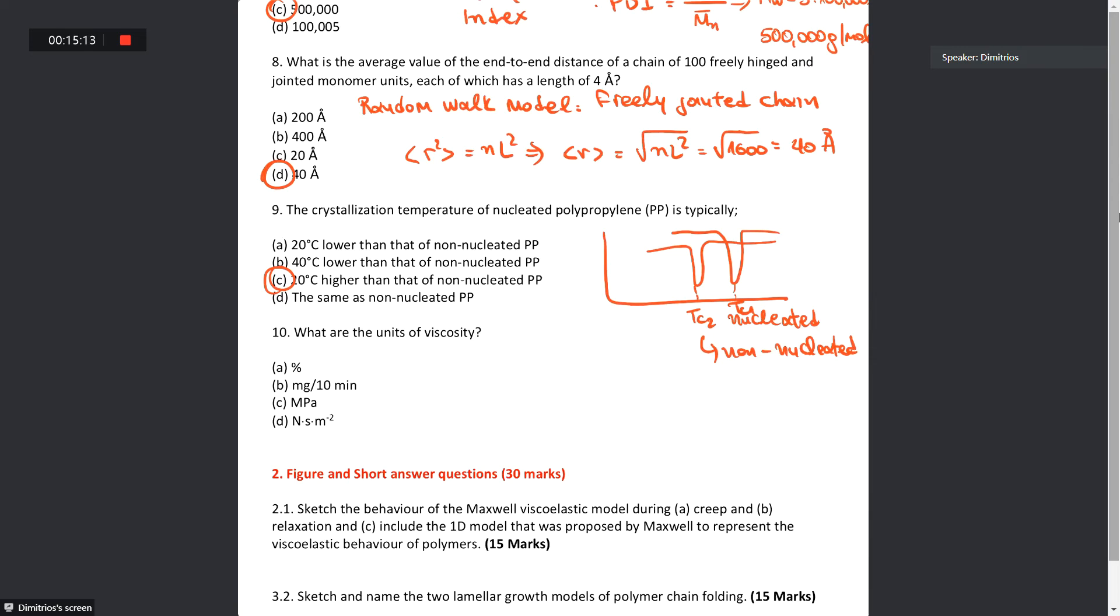Question number 10: What are the units of viscosity? The units of viscosity are newton times seconds per meter squared. One newton times second per meter squared equals to one pascal times second. But we also said one pascal times second is equal to 10 poise as well. And these are the units of viscosity.